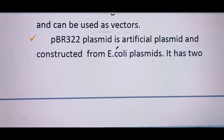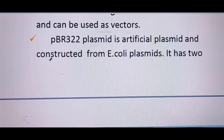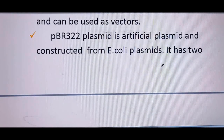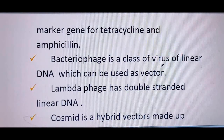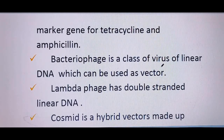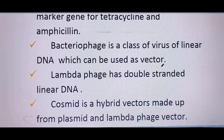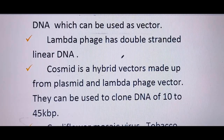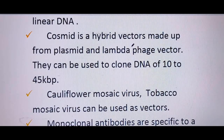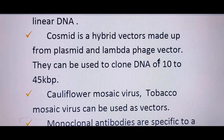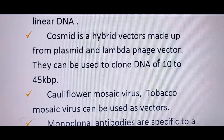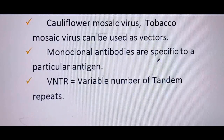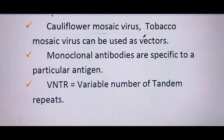PBR322 plasmid is an artificial plasmid constructed from E. coli plasmid; it has 2 marker genes for tetracycline and ampicillin resistance. Bacteriophages are a class of virus with linear DNA that can be used as vectors. Lambda phage has double linear DNA. Cosmid is a hybrid vector made from plasmid and lambda phage vector and can be used to clone DNA of 10 to 45 kilobase pairs.